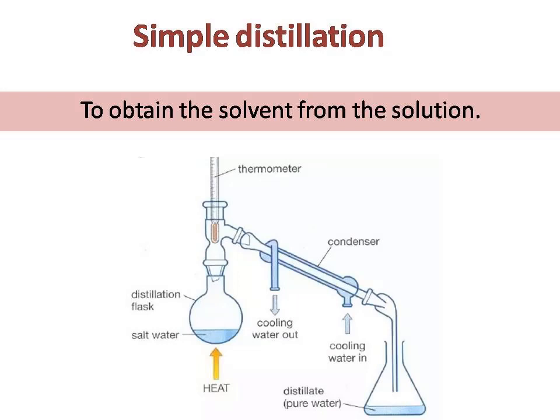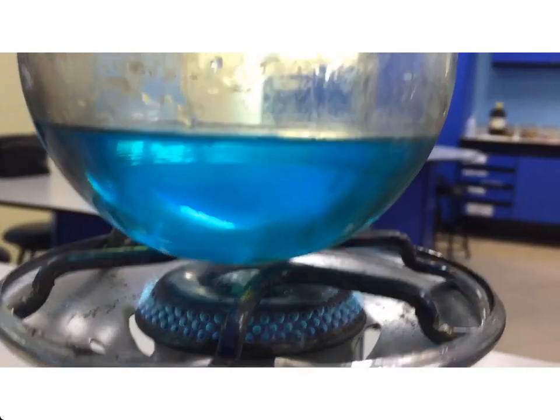Simple distillation is a technique that allows us to obtain the solvent from a solution. If you have a dissolved solid in liquid, you apply heat. The liquid evaporates and the vapor hits the thermometer, which reads the boiling point. The vapor then passes through a condenser — two tubes, one inside the other. The inner tube carries vapor; the outer tube carries water. The flowing water cools the vapor, which condenses and becomes liquid. The distilled substance is called the distillate. The water in the condenser circulates in and out.